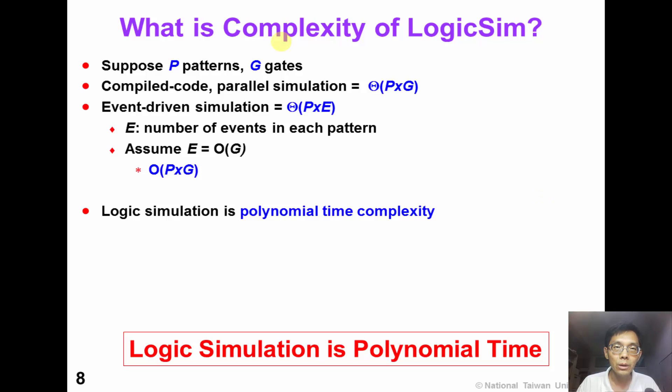In conclusion, what is the complexity of logic simulation? Suppose that there are P patterns and G gates. The compiled code or parallel simulation complexity is C dot P times G. For event-driven simulation, it's C dot P times E, where E is the number of events for each pattern. If we assume that the number of events is O(G), then again we can have O(P times G) complexity.